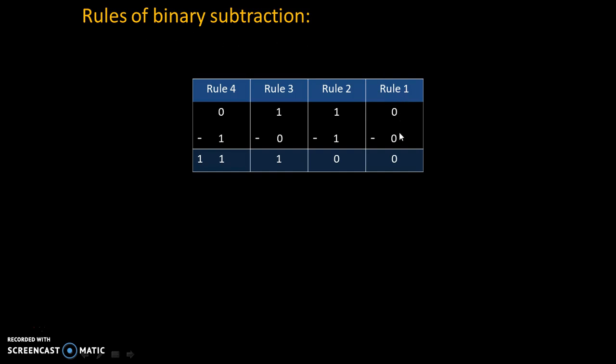Rule 1 is, 0 minus 0 is 0. Rule number 2 is, 1 minus 1 is 0. Rule number 3 is, 1 minus 0 is 1.